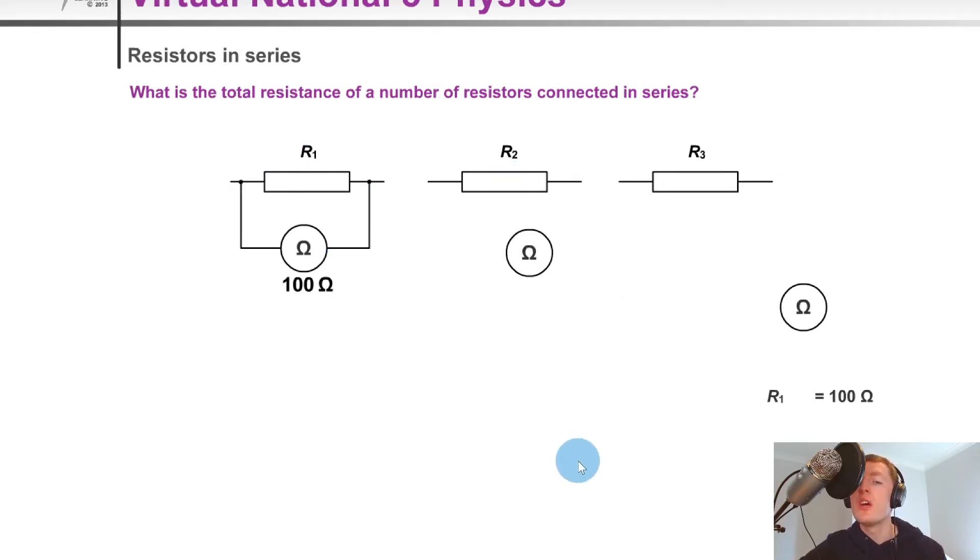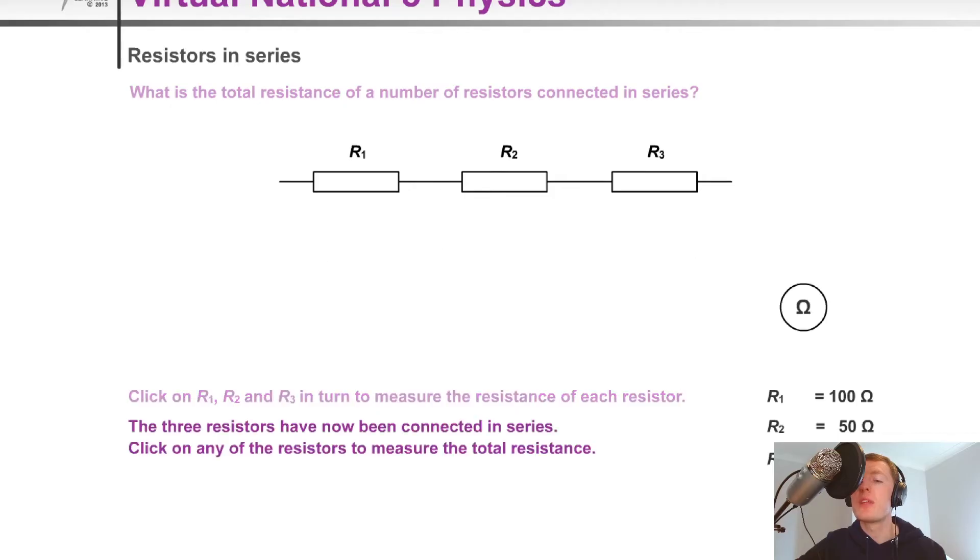Let's say R2 was measured to be 50 ohms, and R3 was measured to have a resistance of 200 ohms. Then we've got these individual resistances for these resistors, but if we were to add these all in series, then all we would need to do is add up all of these resistance values, and it would look something like this.